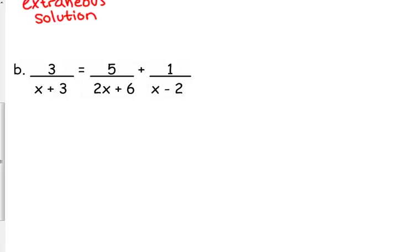3 over x plus 3 is equal to 5 over 2x plus 6 plus 1 over x minus 2. Now, this may look like, oh crap, we have three separate denominators, but do we really? No. Because you should factor that middle denominator, and you see that there is an overlap.